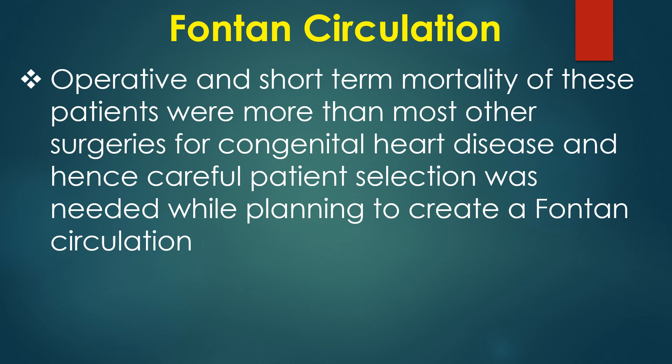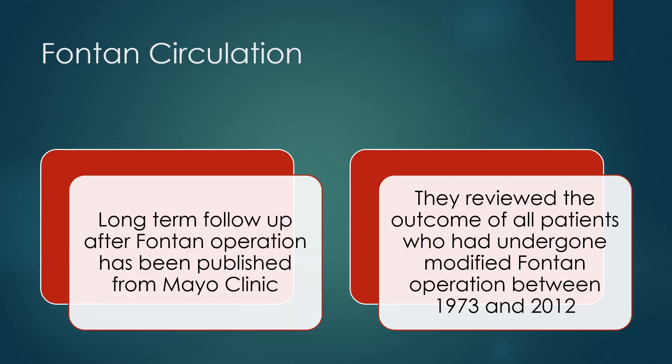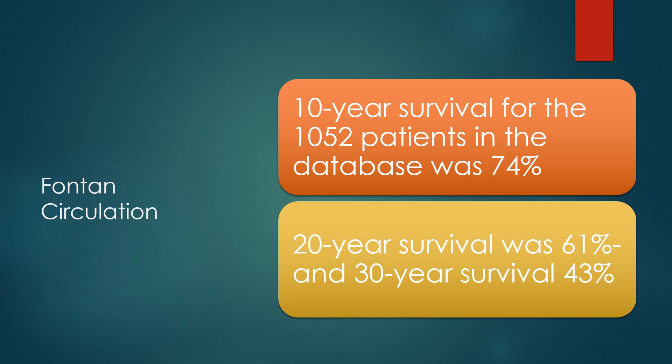Operative and short-term mortality were higher than most other surgeries for congenital heart disease, hence careful patient selection was needed. The concept of two-stage repair — initial hemi-Fontan in which the superior vena cava was anastomosed to a branch pulmonary artery, followed a few months later by completion Fontan connecting inferior vena cava to branch pulmonary arteries — was introduced by Norwood and colleagues. Long-term follow-up from Mayo Clinic reviewing outcomes of 1052 patients between 1973 and 2012 showed 10-year survival of 74%, 20-year survival of 61% and 30-year survival of 43%.